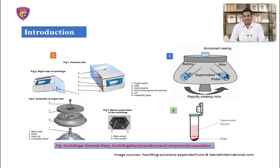For example, when sand particles are added to water in a bucket, they travel slowly but sediment faster when the bucket is swung around in a circle. Biological materials show a drastic increase in sedimentation when they undergo acceleration in centrifugal force. Relative centrifugal force, in short form called RCF, is expressed as a multiple of the acceleration G due to gravity.